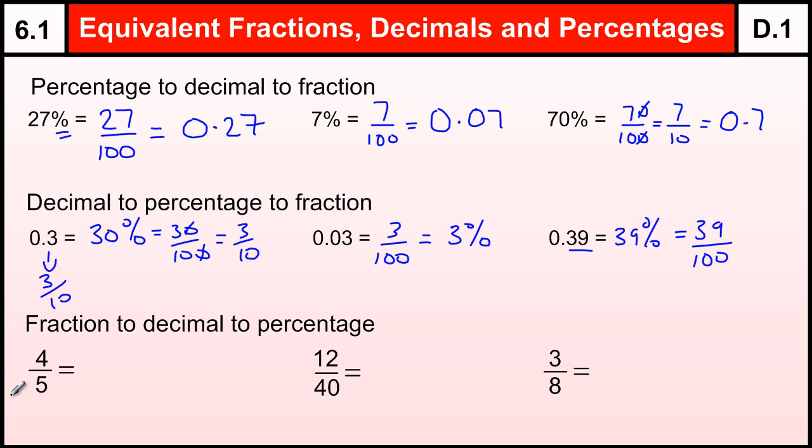But if we make it out of 100, or out of 10, then by changing it to an equivalent fraction, if I times the top and bottom by 2, to get 8 over 10. 4 fifths is equivalent to 8 over 10.